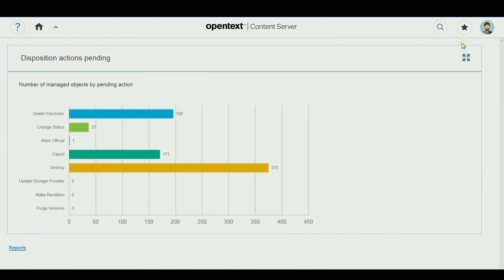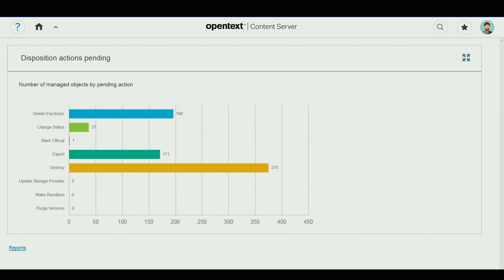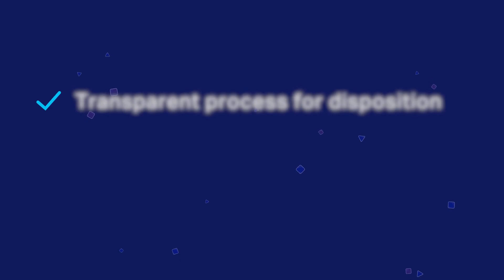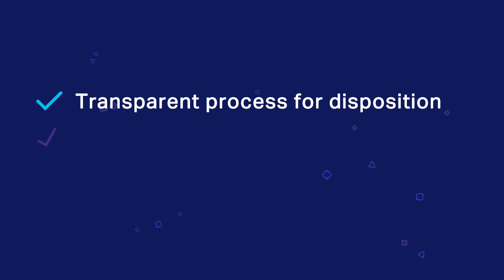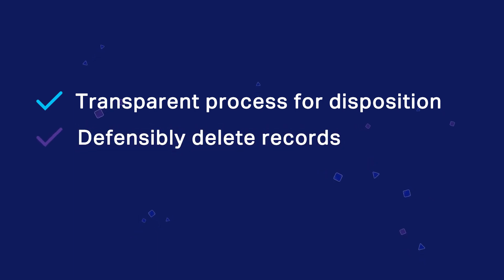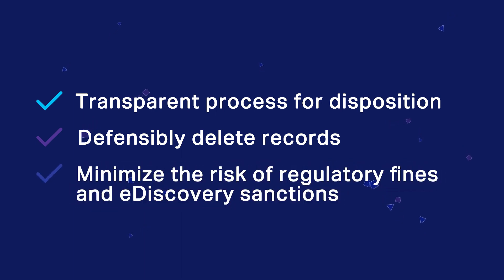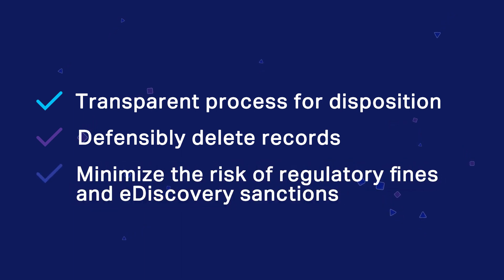OpenText Records Management provides dashboard reports to view how many and what types of items are pending disposition. OpenText Content Suite allows companies to demonstrate a transparent process for disposition, defensively delete records and transitory information that are of no business or legal value, and minimize the risk of regulatory fines and e-discovery sanctions.